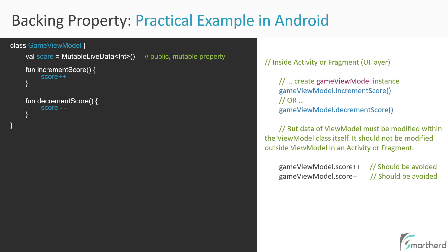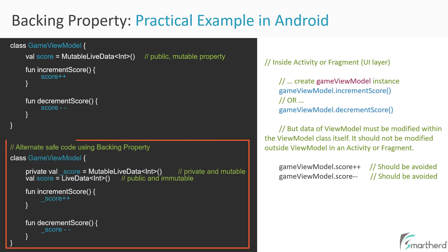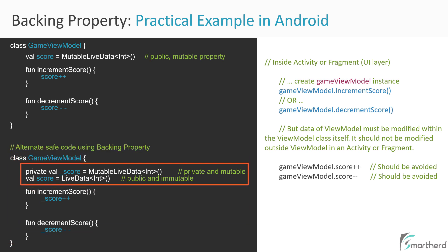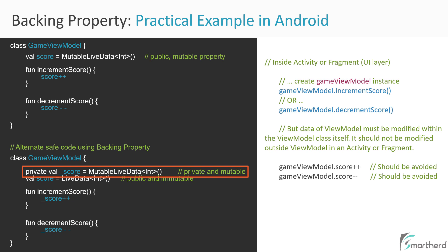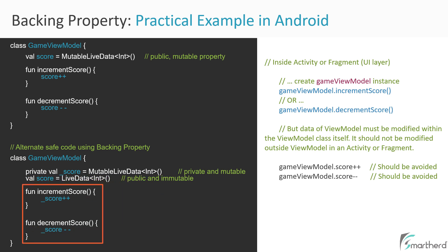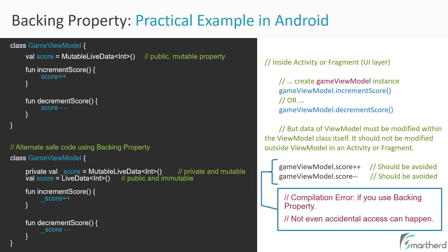The solution is again the usage of backing property. This is our backing field — private and with an underscore. This is our backing property — public but immutable to the outside world. The two functions remain the same, but instead of the actual property name, we now use the backing field with an underscore. So any direct modification from outside the class won't compile, safeguarding our score property. This is how in Android you can encapsulate your property using the concept of backing property.